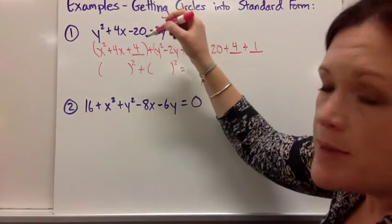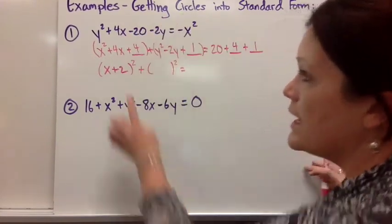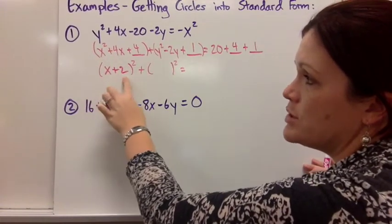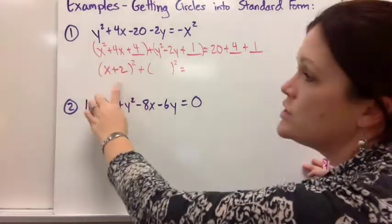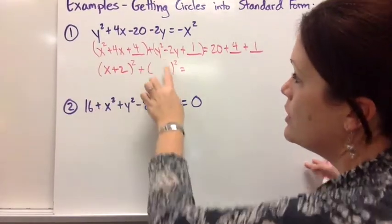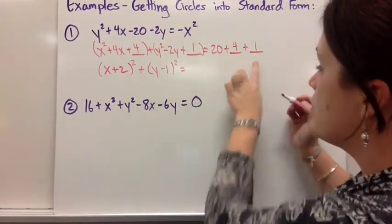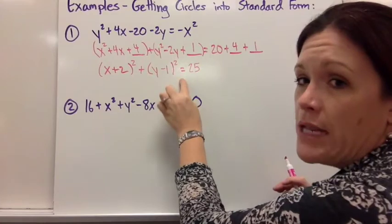So its factors match and its factors are x plus 2 because it's always half of that number and it's always that sign. Just x plus 2 squared is equivalent to x squared plus 4x plus 4. So we can rewrite it. Over here we have y minus 1 and then 20 plus 4 plus 1 is 25. And now that looks like standard form.